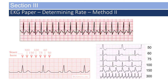This method is useful for tachycardias. If we find an R-wave right on a line, every subsequent line has a corresponding number of beats per minute: 300, 150, 100, 75, 60, and 50. So if we find the first R-wave, the very next R-wave falls midway between 60 and 75. The difference between 60 and 75 is 15; divide that in half to get 7.5, add that to 60, and you get approximately 67.5 — round that up to approximately 68 beats per minute.